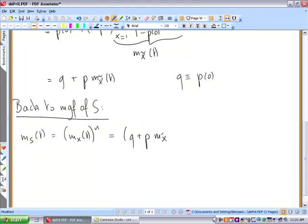So we have q plus p times m_X_tilde(t) to the power n.